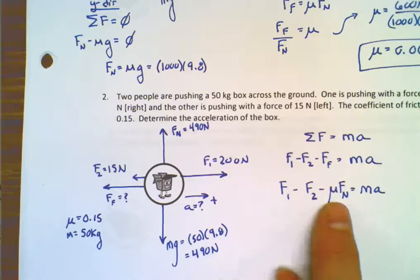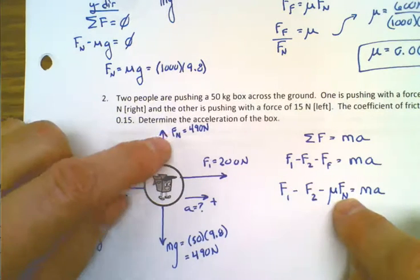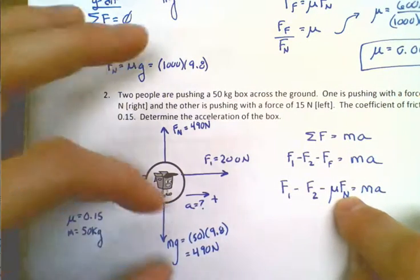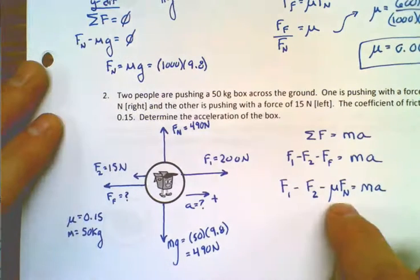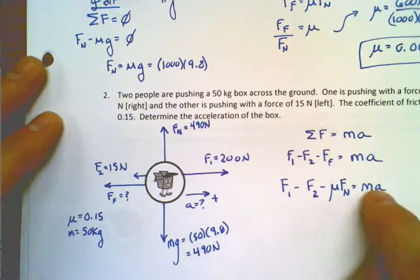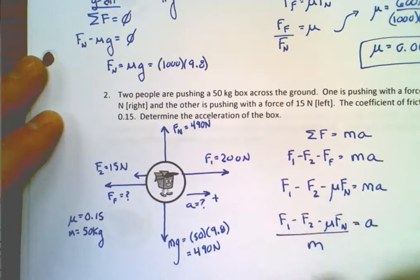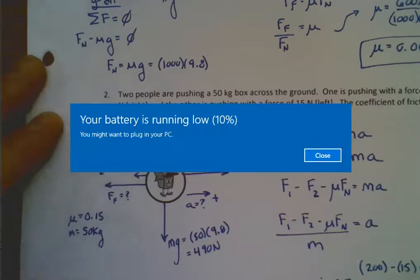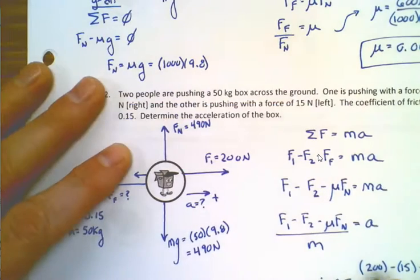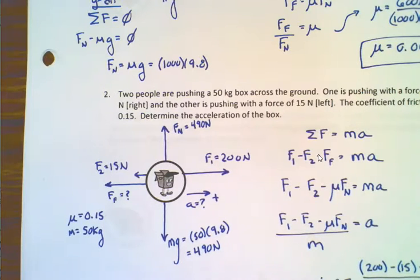And now some of you are like, okay, well, this is easy. Basically, we've got mu Fn, and here we know that since there's nothing pushing down and nothing pulling up besides just gravity, the gravitational force here must balance with the normal force. So, therefore, we know the normal force is 490. So, at this point, since we're solving for acceleration, we can just divide both sides by the mass. So, therefore, the acceleration is F1, which is 200, minus 15, minus 0.15 times 490, and then divide that by 50.